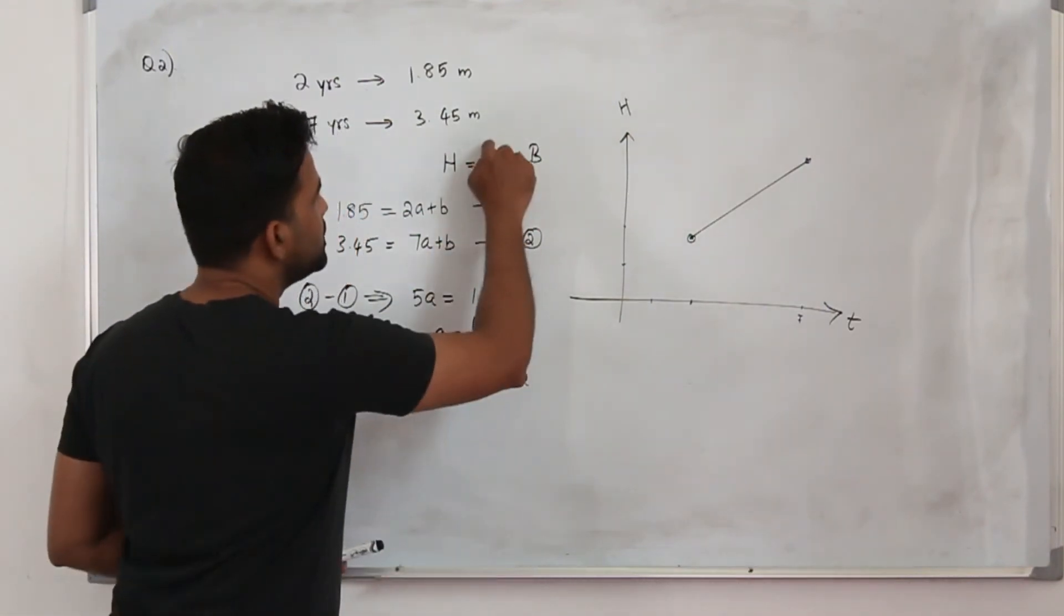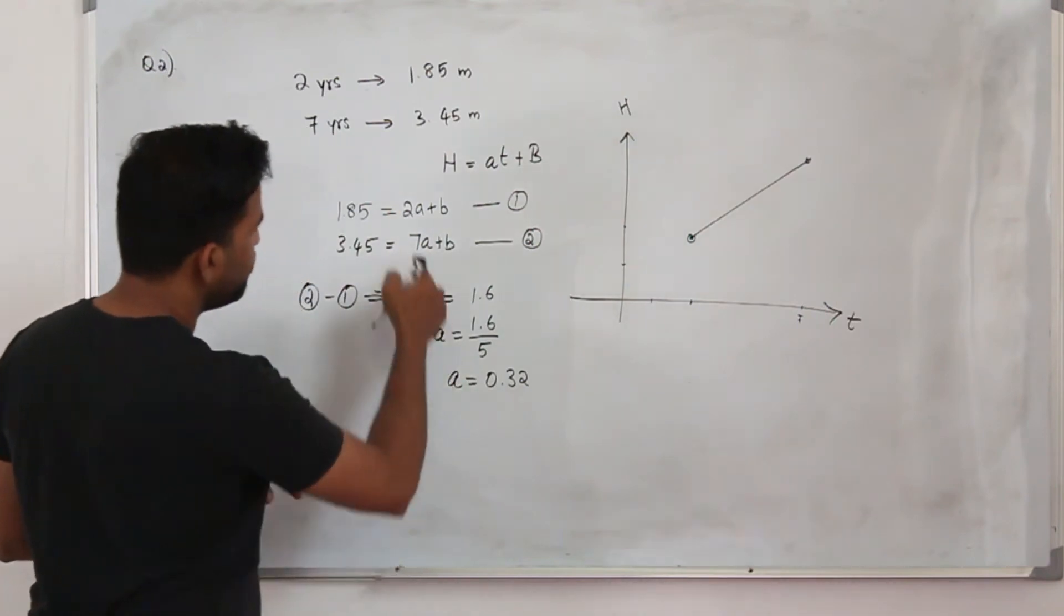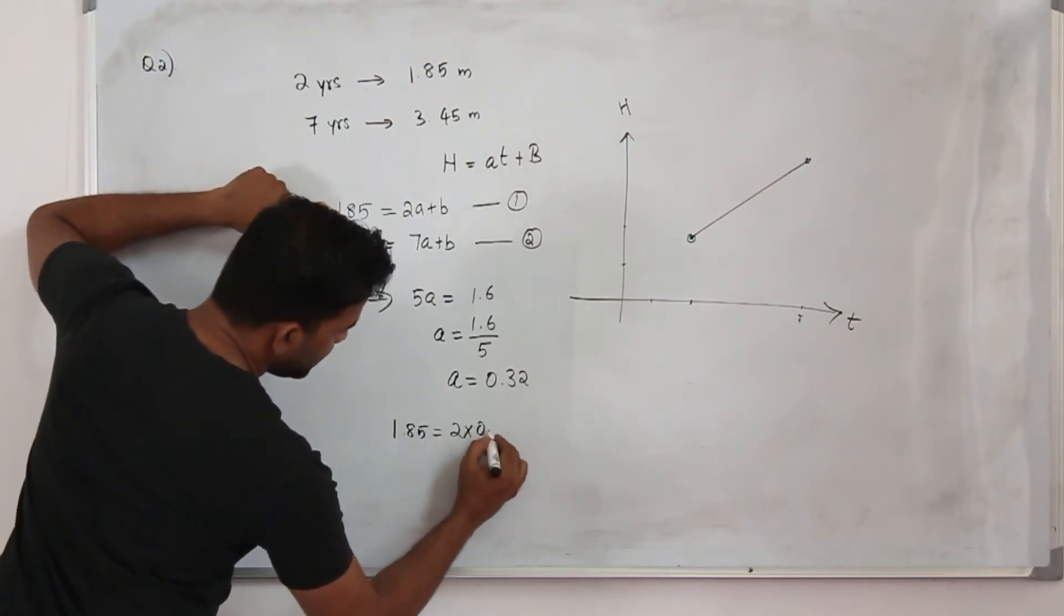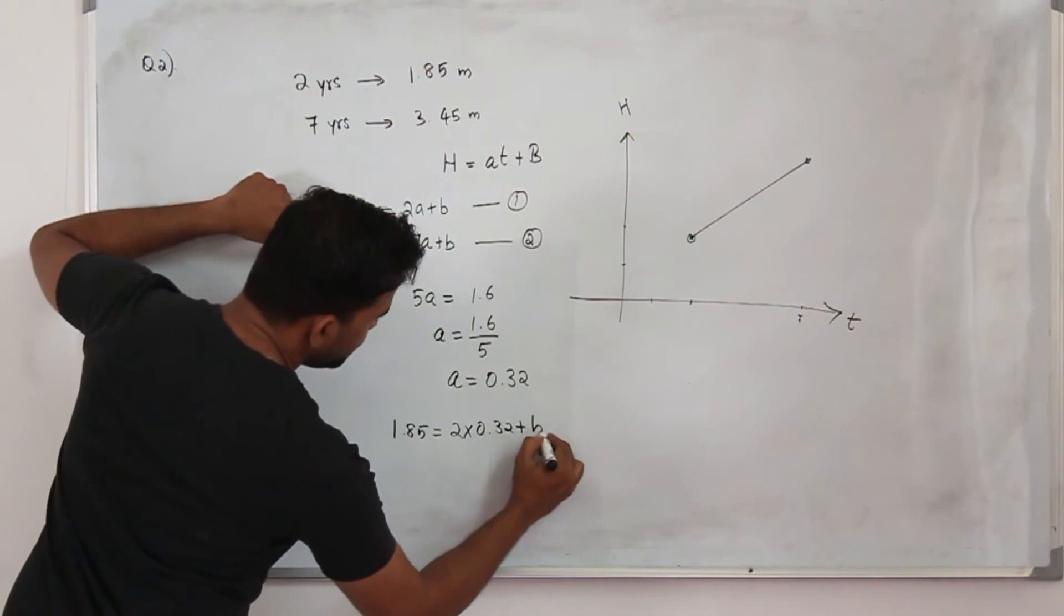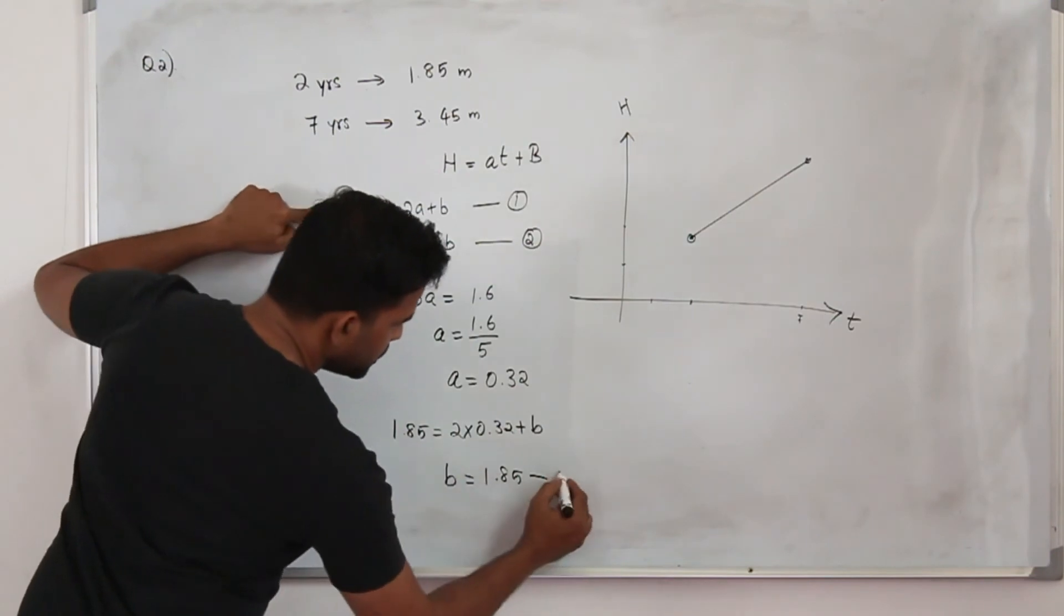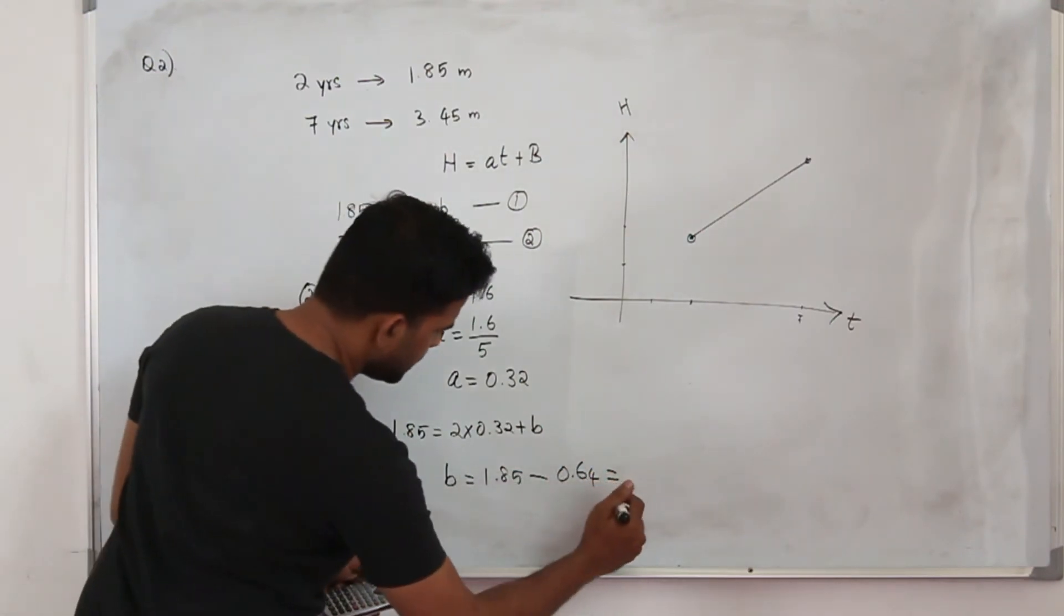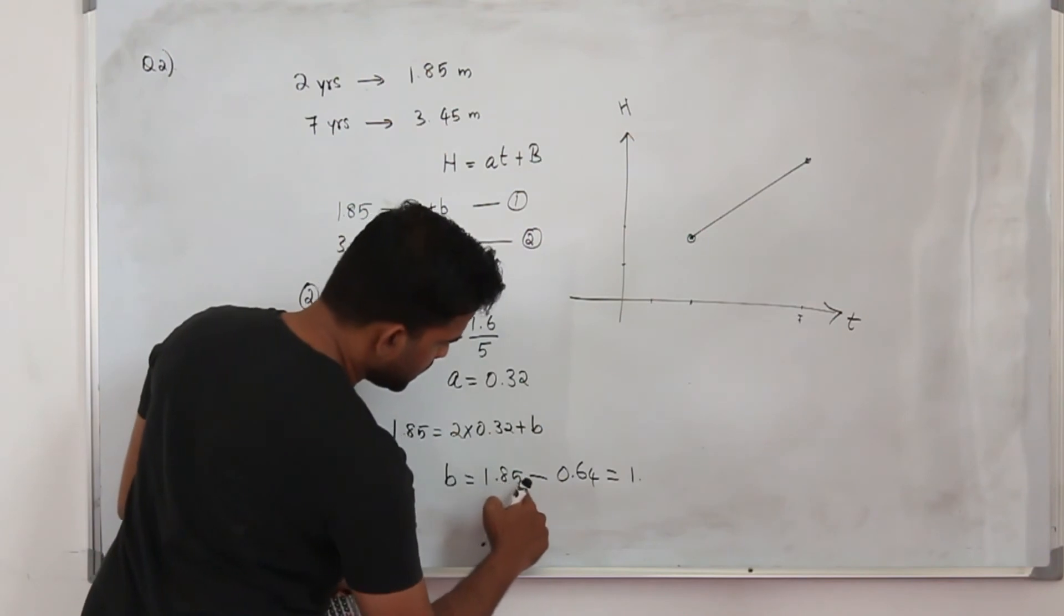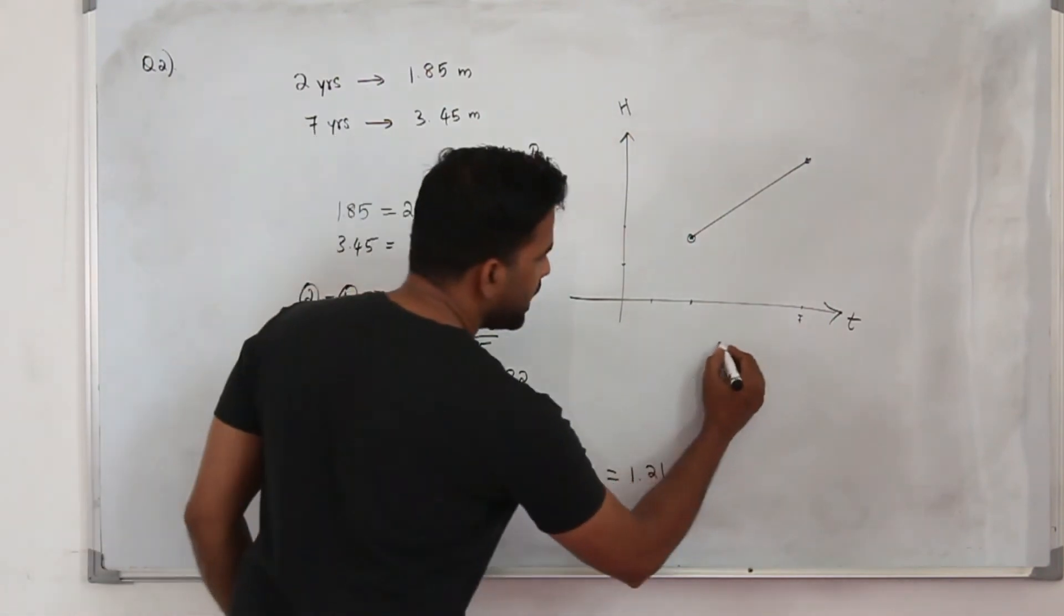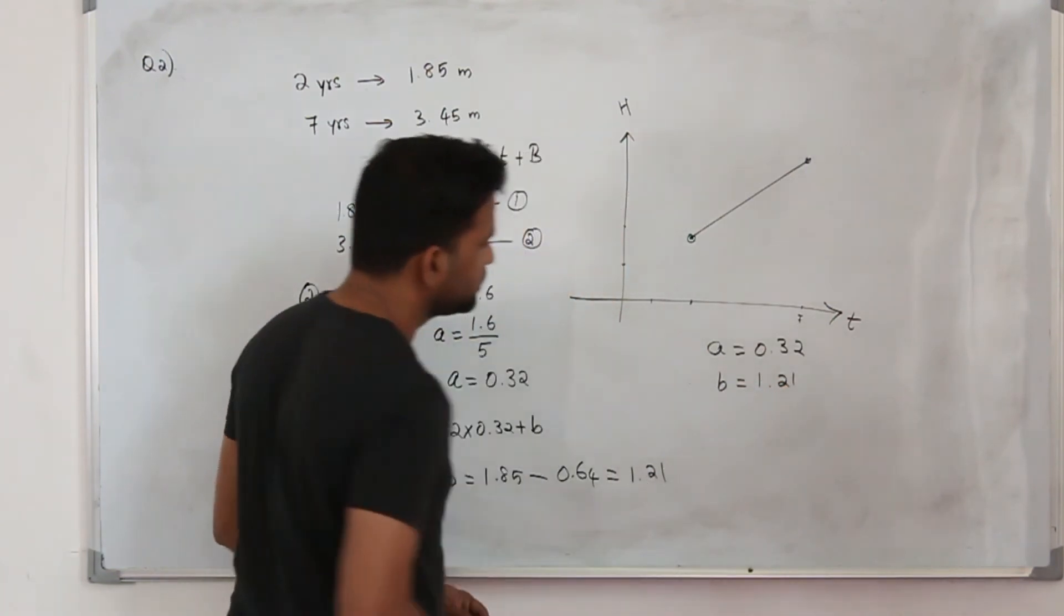Now substitute this a back into any one of the equations so you can find b. Take the first equation, 1.85 equals 2a plus b, so your b will be 1.85 minus 2 times 0.32, which is 0.64, should be 1.21. So you got the values of a and b already, a is 0.32 and b is 1.21.